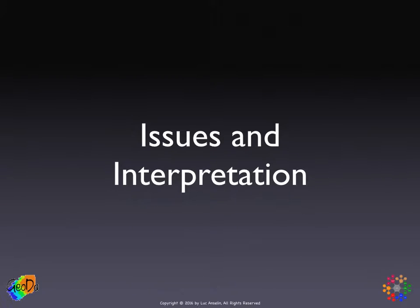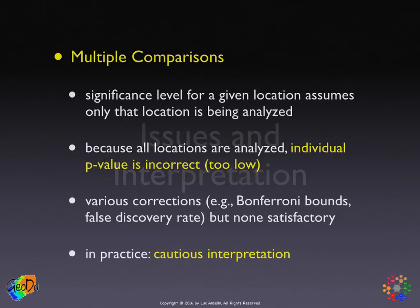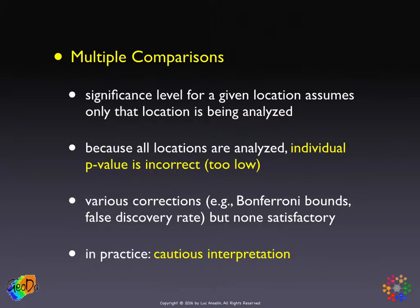We close with a brief discussion of three important issues pertaining to the use of the statistic. First, there's this problem of multiple comparisons. In the conditional permutation, the pseudo p-value that results for a given location is done just for that location, and it does not take into account that all the other locations are also being analyzed.